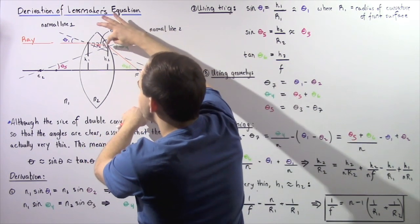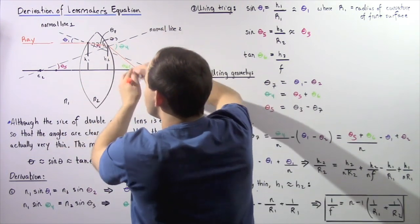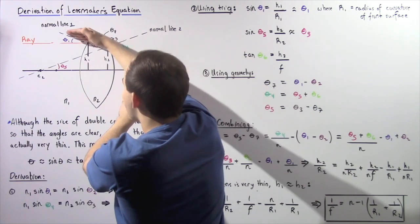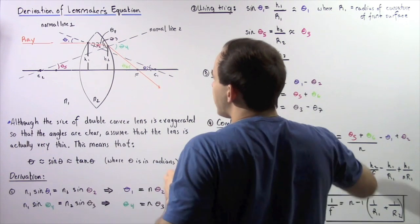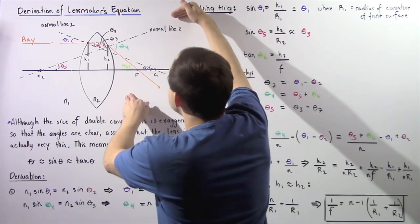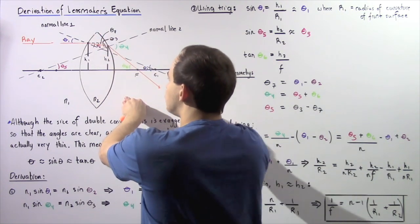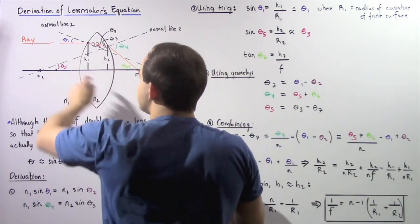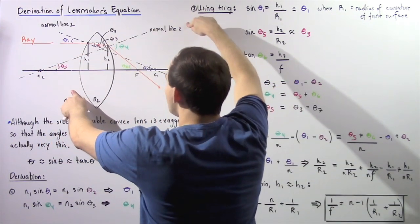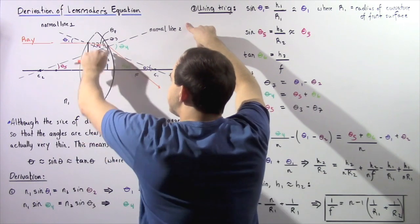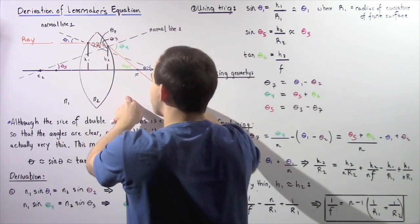Theta 3 is the angle between normal line 2 and the ray passing inside the lens. Theta 4 is the angle between normal line 2 and the final refracted ray. Angle 5 is the angle between the axis and normal line 2, and angle 6 is the angle between the axis and the final refracted ray.